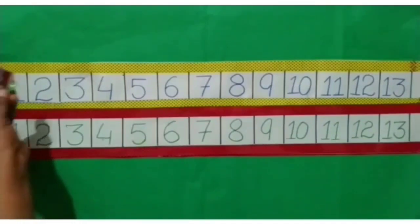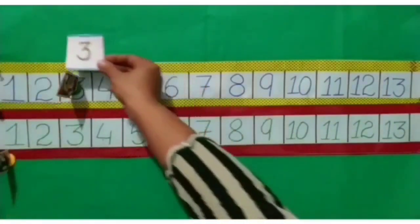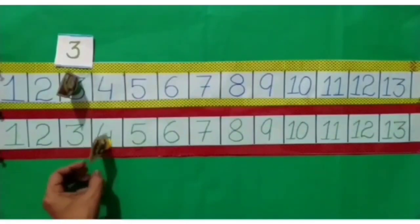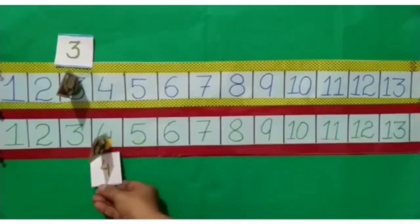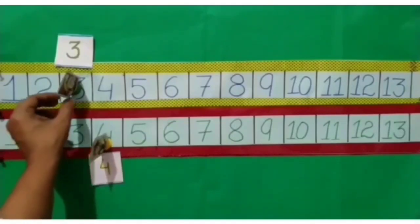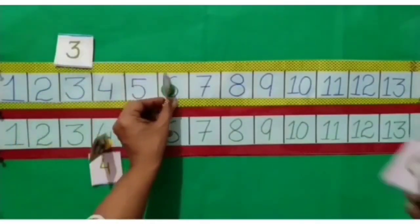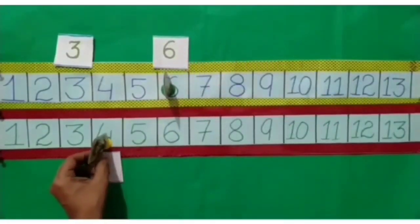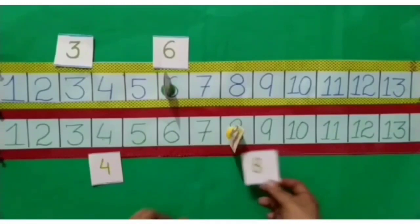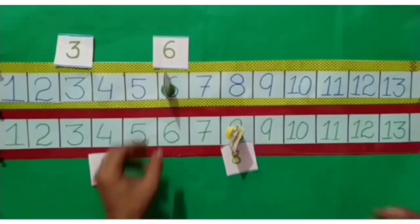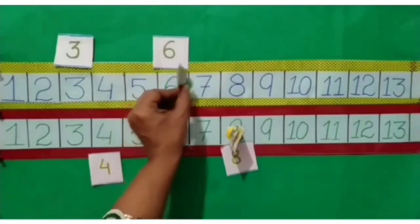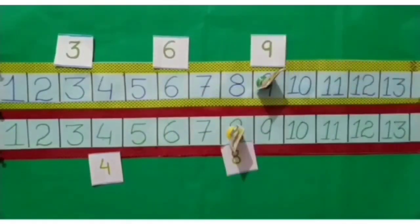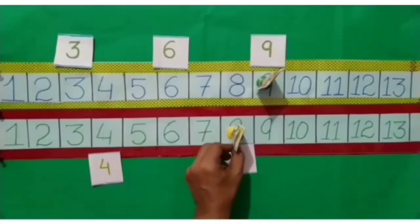In her first jump she reached at 3. In his first jump Rohit reached at 4. From here Pinky jumped to 6. Now from here Rohit jumped to 8. Now Pinky's turn. From here Pinky jumped to 9.